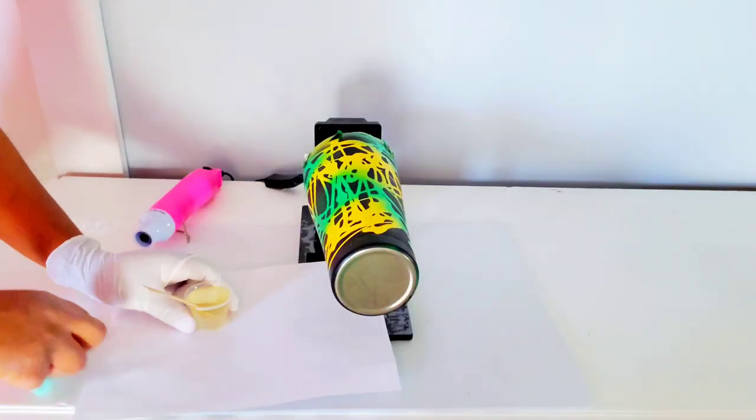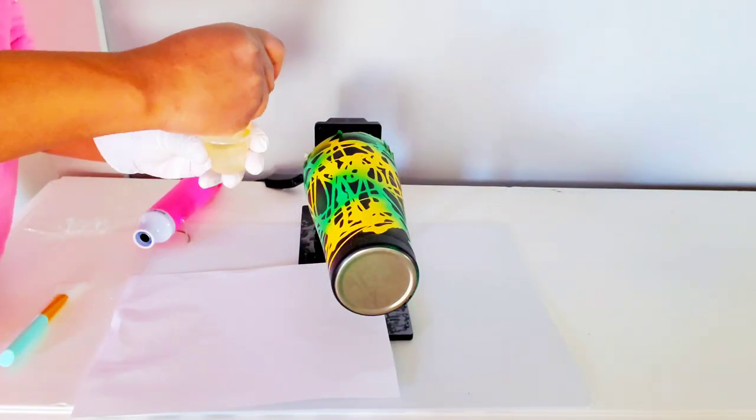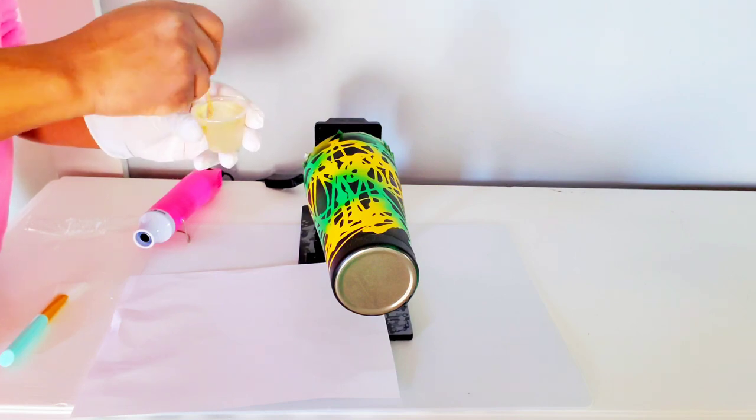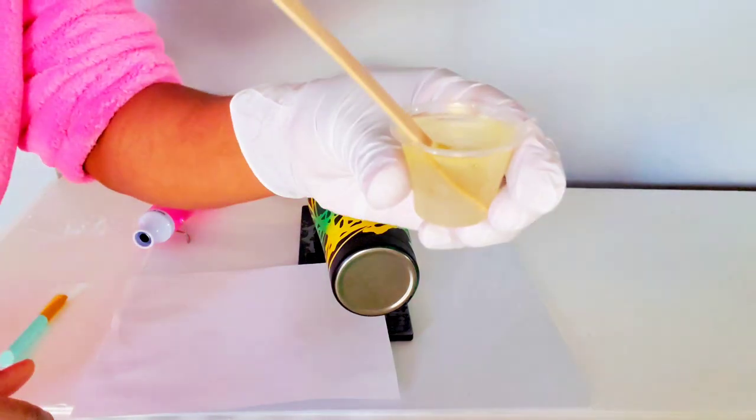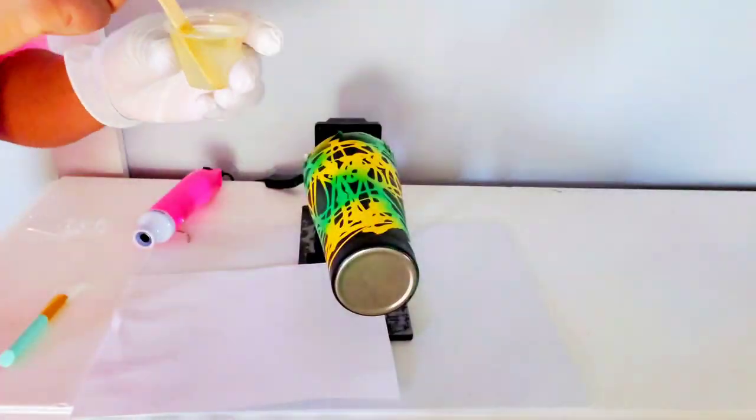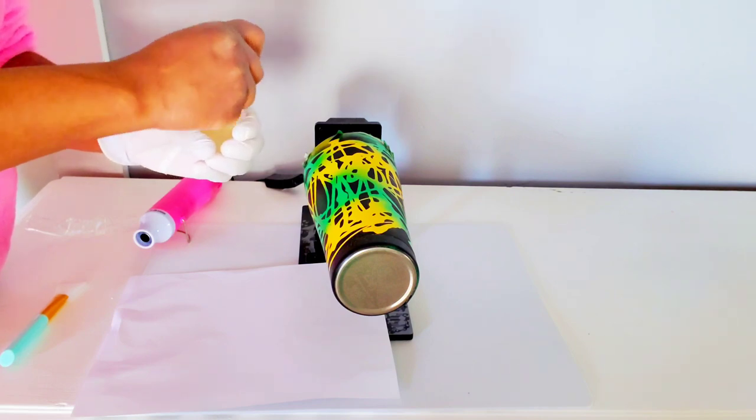After leaving my tumbler to dry for a few hours, now we're gonna put our epoxy on. Right there I'm just mixing my epoxy. This video is not to show you how to mix epoxy, just to show you how I create this tumbler. I have my Part A and my Part B, I'm mixing that up and I am going to add it to my tumbler once I'm done mixing it up.